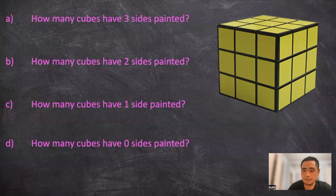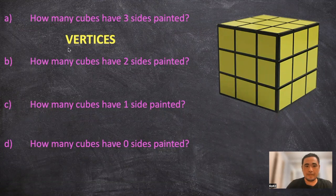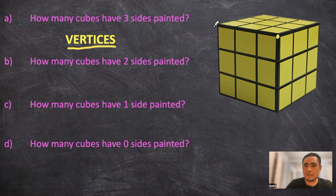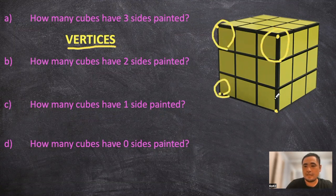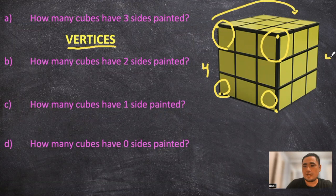Part A, how many cubes have 3 sides painted? So for part A, you can pay attention to the vertices or the corners of the cube. If you look at the corners, the 4 corners here are going to have the 3 sides painted. So there's 4 right here. And that means there's going to be 4 on the other side for a total of 8 cubes.